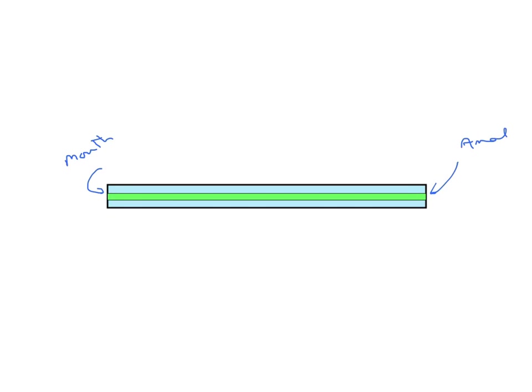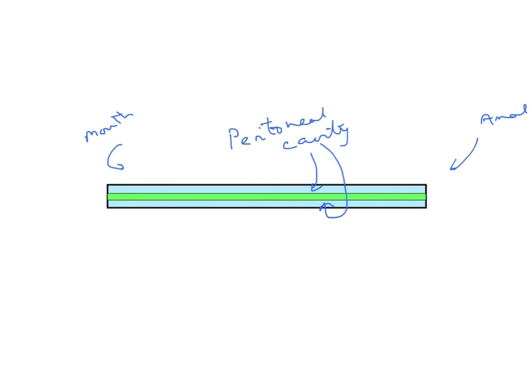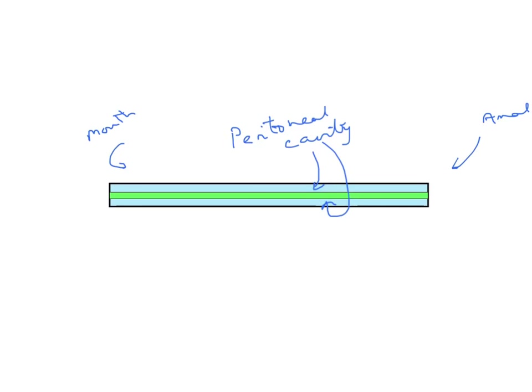The blue space surrounding the green gut represents the peritoneal cavity. In all the diagrams of this tube that we'll see in this presentation, always remember that this part over here is the dorsum, and this part over here is the ventral aspect.